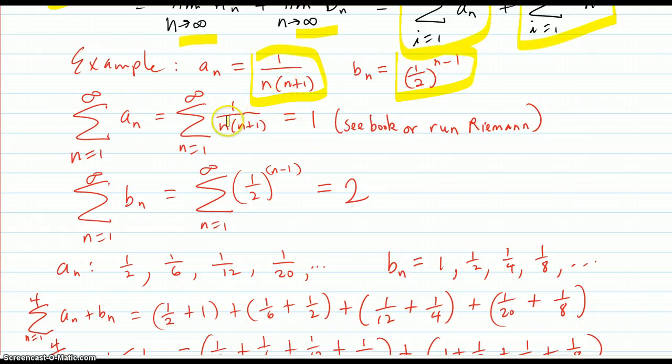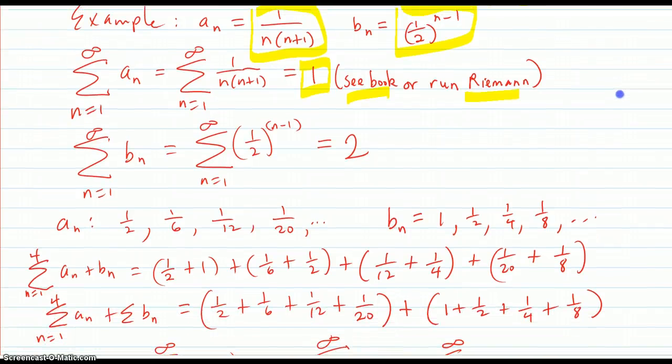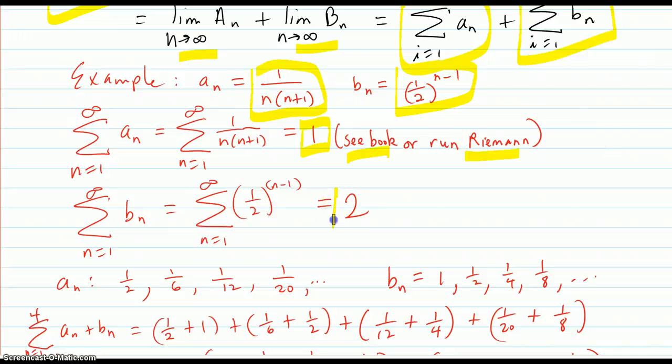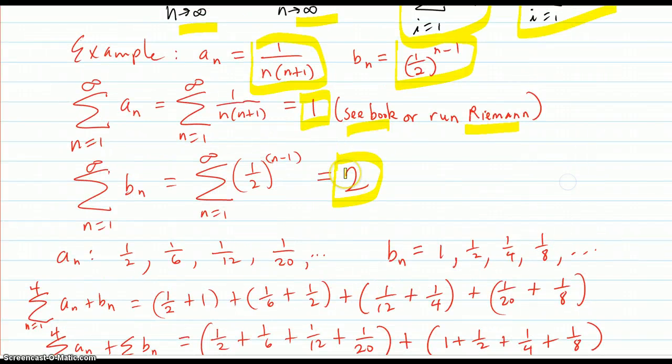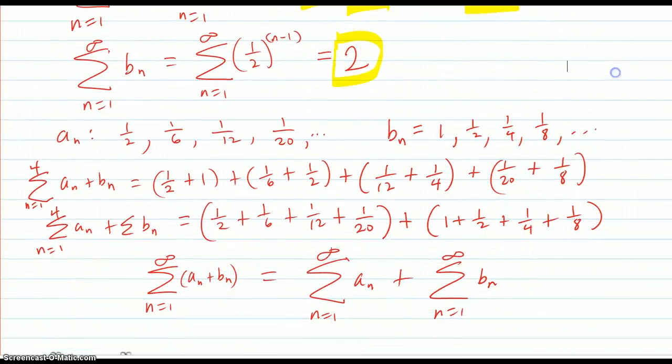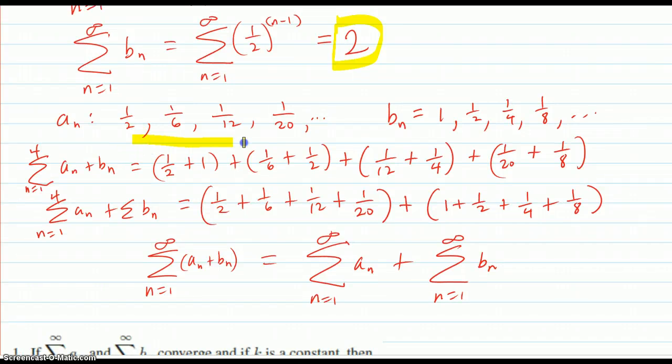The first sequence's series adds up to one, as seen in the book or you could run the Riemann program. The second one sums to two. So we expect that the combo sum would add up to one plus two, which is three.